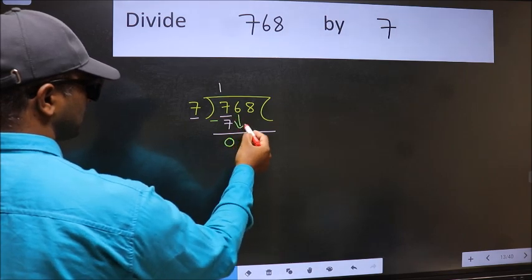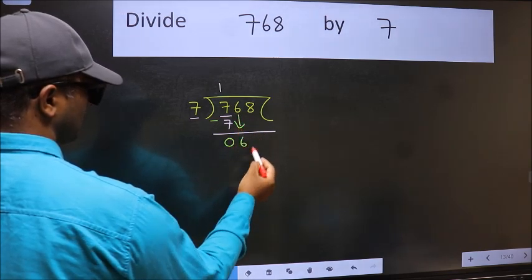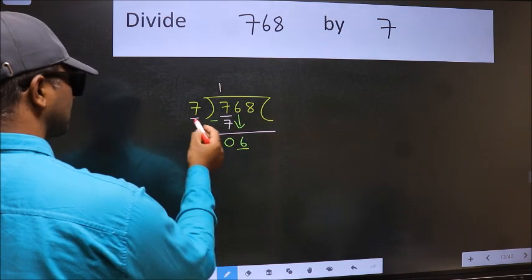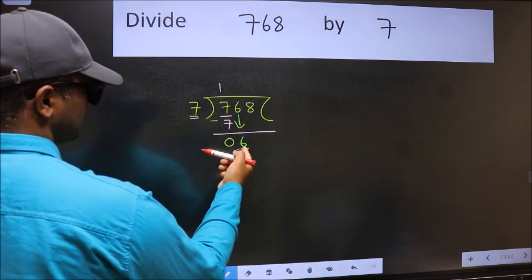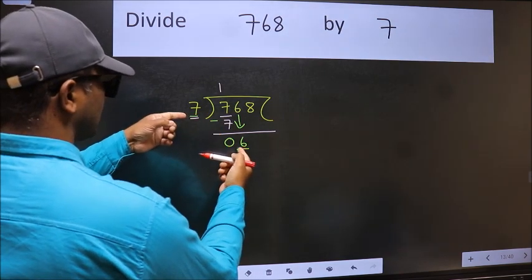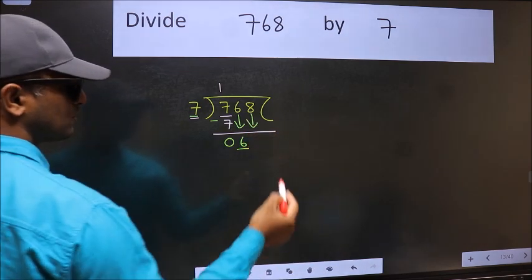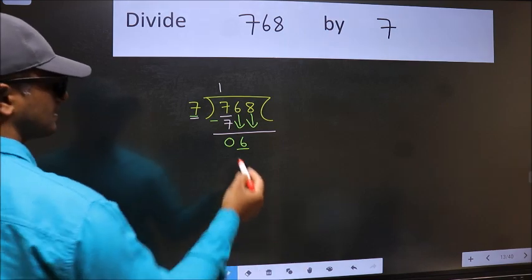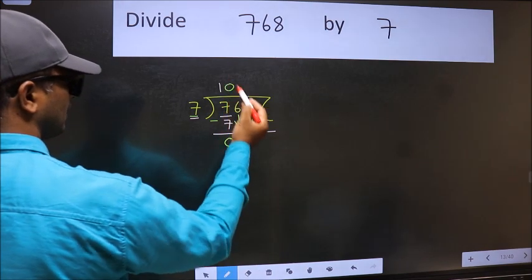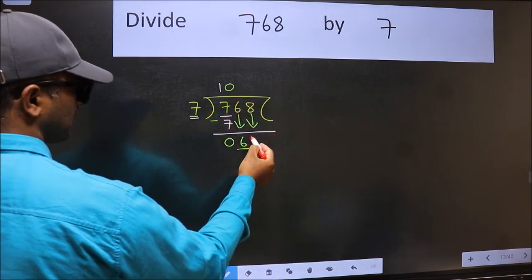After this, bring down the next number. So 6 down. Now here we have 6 and here 7. 6 is smaller than 7, so we should bring down the second number. And the rule to bring down the second number is we should put 0 here. Then only we can bring this number down.